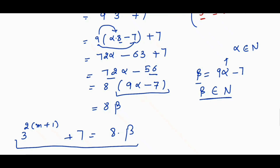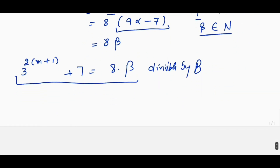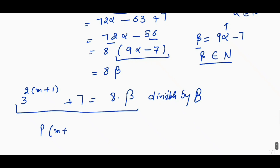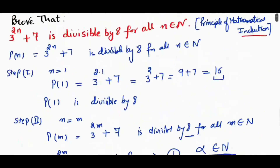So 3 raised to the power 2(m+1) plus 7 is equal to 8 into beta, which means it is also divisible by 8. Therefore, we can say that 3 raised to the power 2n plus 7 is divisible by 8 for all n belonging to natural numbers. Thank you everyone for watching my video.